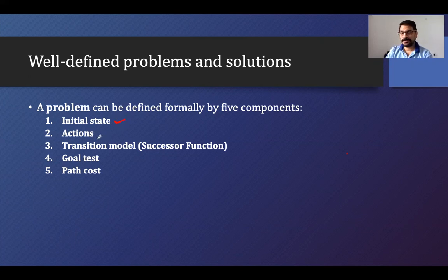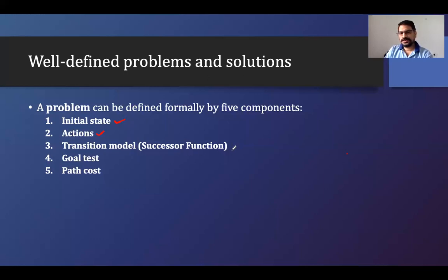The second component is the actions that we have available. An action sequence — we can go left, we can go right, we can start sensing, or we can do some operation. We'll take the example of the cleaning agent. Third is the transition model, also called the successor function. In the transition model, we put some state and some action, and it gives us another state — that is the transition model or transition function.